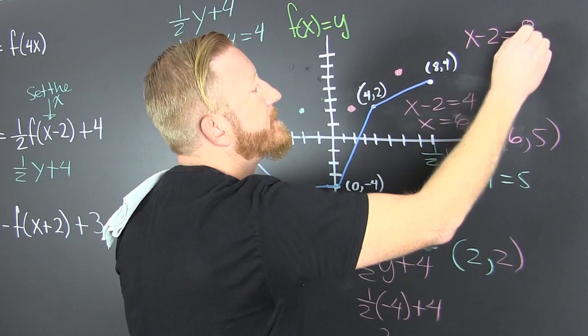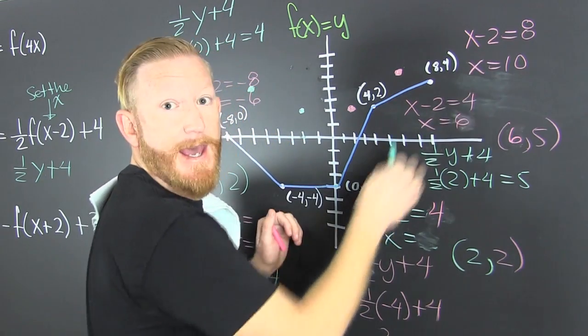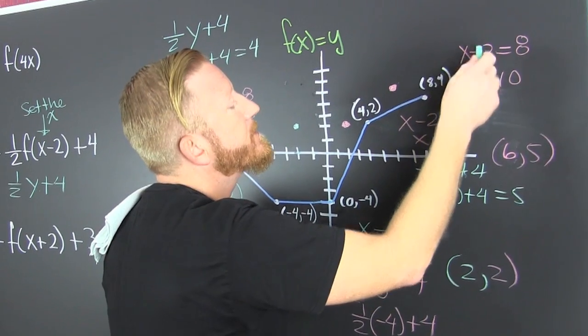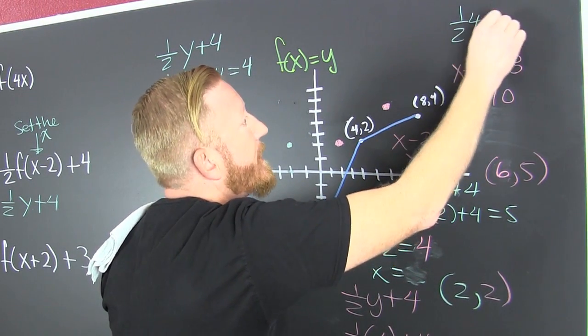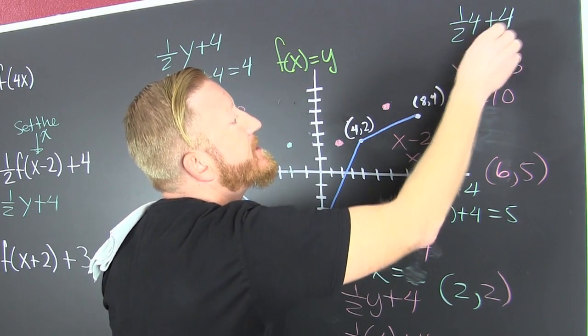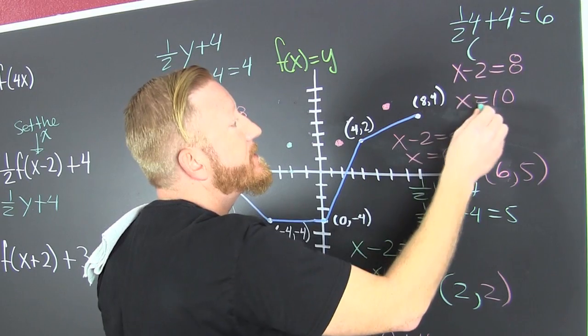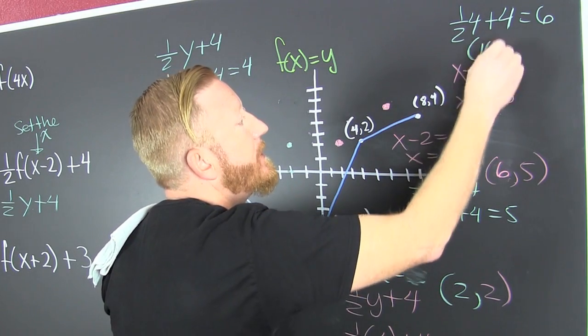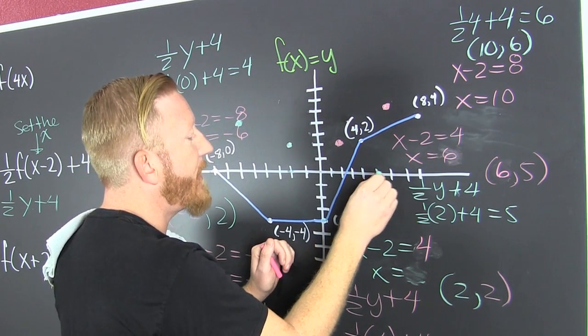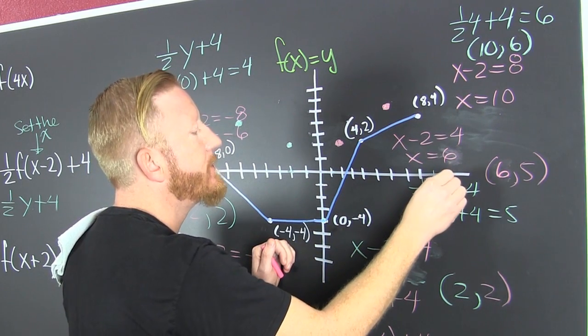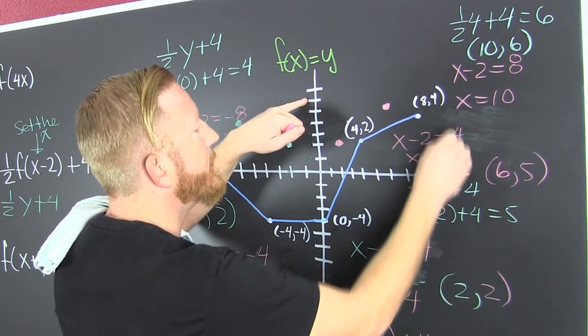Let's translate that. x minus 2 is 8. So then x is equal to 10. Then we're looking at 1 half 4 plus 4. So that's 2, that's 6. So then our new point there is 10 and 6.